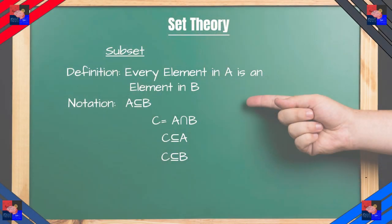Now let's look over the subset. The subset is that every element in A is an element in B. Here, the notation is this. And in this example, if C equals A intersection B, then C is a subset of A and C is also a subset of B, because every element in C is an element in A but also an element in B. That's why we use an intersection.